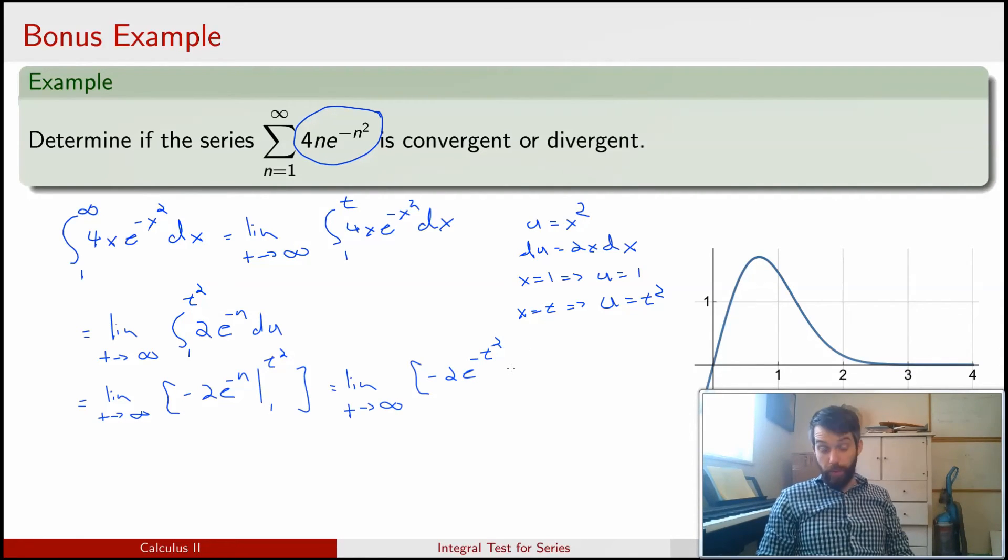all subtracted—because I've got two minus signs, I've got to put a plus sign—all plus 2e to the minus 1.